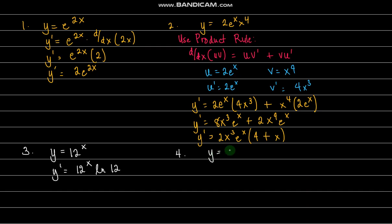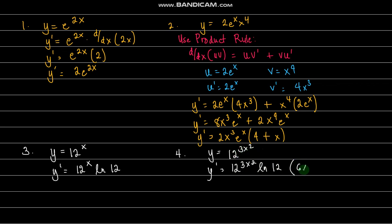So what if we have y equals 12 raised to 3x squared? How are we going to differentiate this? Simply, y prime equals 12 raised to 3x squared times ln of 12, but we also multiply by the derivative of the exponent. The derivative of 3x squared is 6x. So our answer is 6x times 12 raised to 3x squared times ln of 12. That's the process of differentiating a general exponential function.